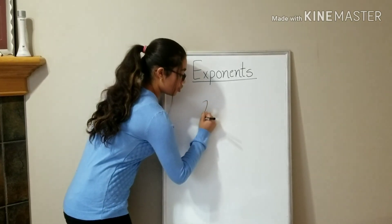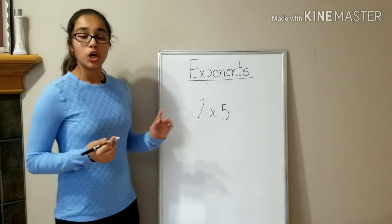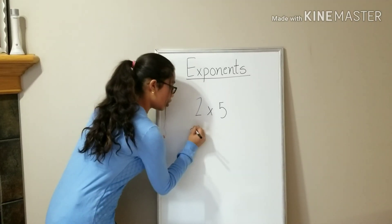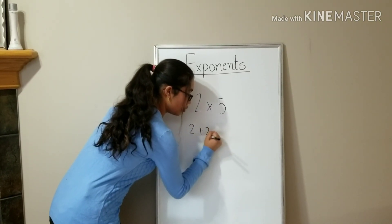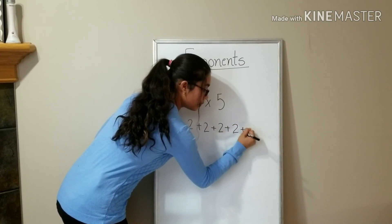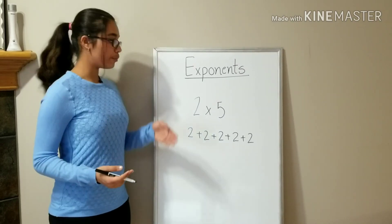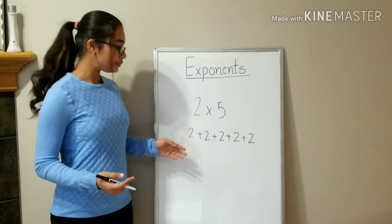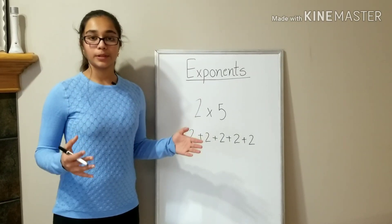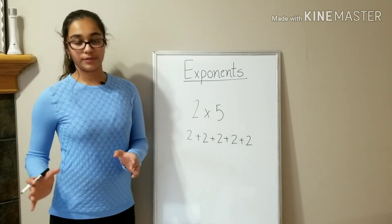If we have the question 2 times 5, then what does that mean? That means 2, five times. That means 2 plus 2 plus 2 plus 2 plus 2. Instead of writing this big equation, we make it into multiplication: 2 times 5. Adding the same number an amount of times.